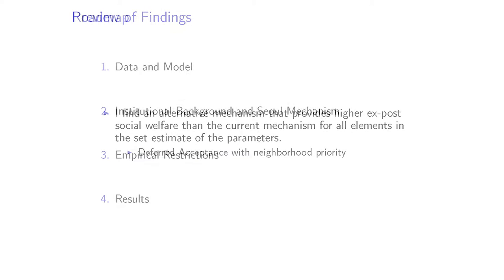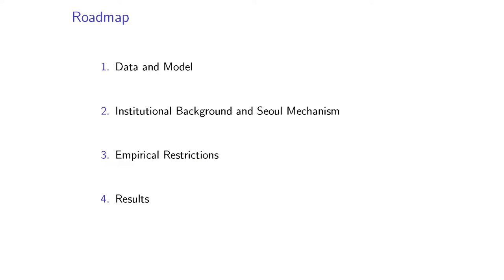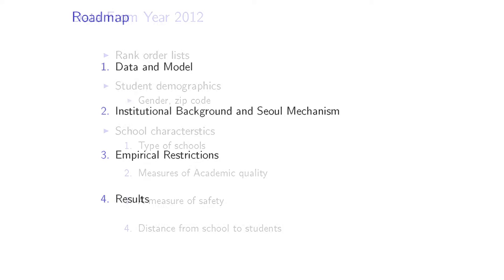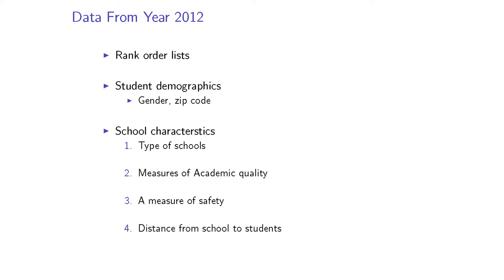The roadmap: I'll talk about the data and model briefly, give institutional background on how the mechanism works, discuss the empirical restrictions I'm imposing, and then show the results. I'm using data from 2012, two years into the implementation. The data includes the complete set of rank order lists submitted by students, student demographics such as gender and zip code, and school characteristics: type of school, measures of academic quality, measures of safety, and distance from schools to students.